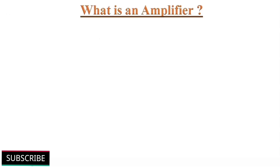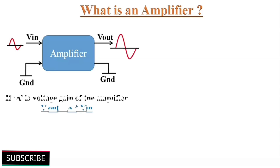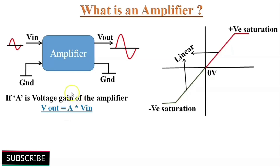What is an amplifier? An amplifier increases the level of its input signal. It may be voltage, power, or current. If A is the voltage gain of an amplifier, then output voltage Vout is equal to A, or gain, into input voltage Vin. From this formula, one thing we can observe is that there must be a linearity or linear response between the amplifier's input and output.